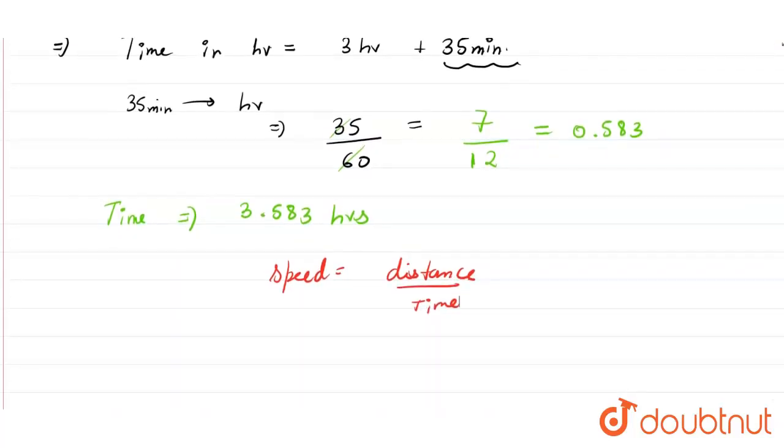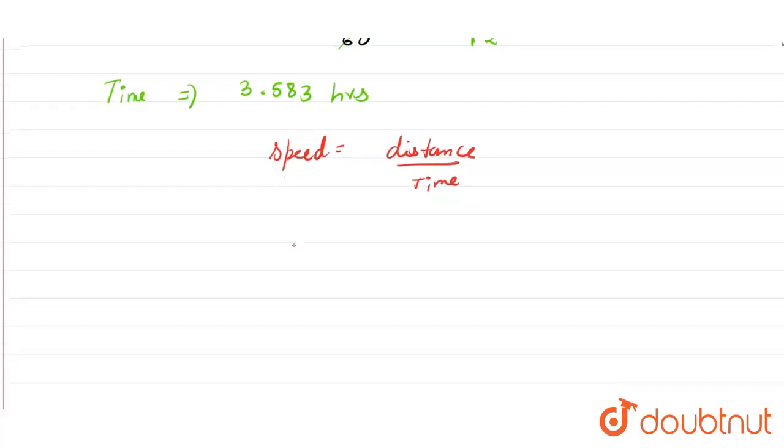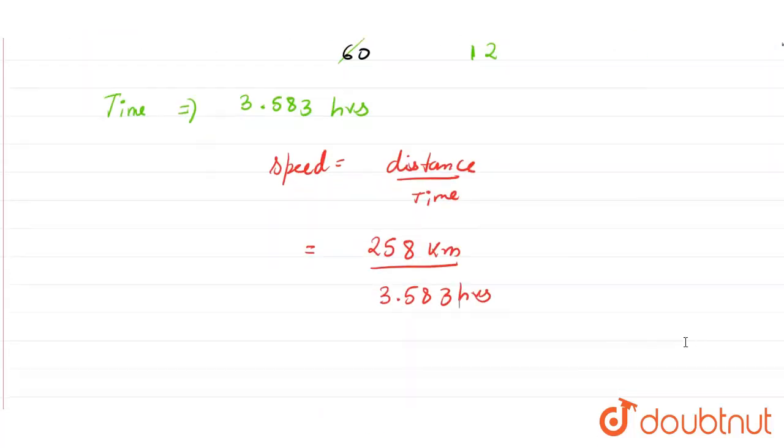So here we can write that distance is how much? 258 kilometers divided by the time, that is 3.583 hours. So here we get the speed as 72 kilometers per hour by calculating this. So 72 kilometers per hour is the speed. This is the answer to this question. Thank you.